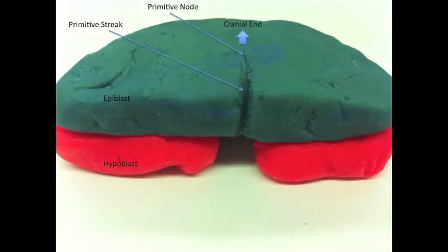Gastrulation begins with a linear induction of the primitive streak that forms from the caudal to cranial end of the blastodisc. At this point, two embryonic axes are determined: the anterior-posterior axis and the right and left axis.